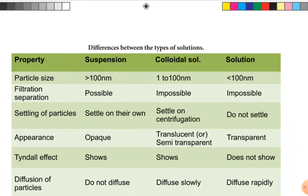Settling of particles — in suspension, particles settle down; in colloidal solution, they do not easily settle and we must use centrifugation; in true solution, particles do not settle because they are uniformly distributed in the solvent. Appearance — suspension is opaque; colloidal solution is translucent, meaning light passes through partially; true solution allows light to pass through easily.